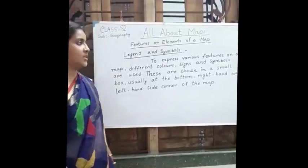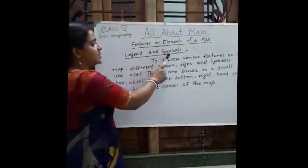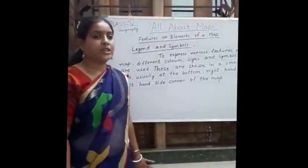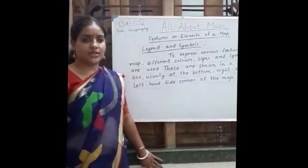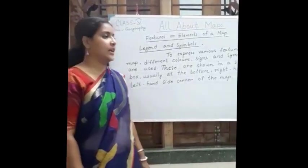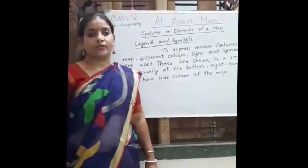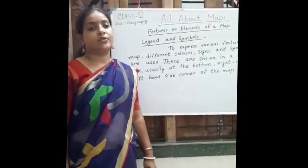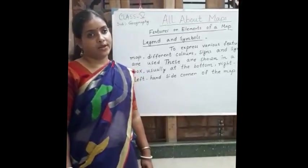Come to the next feature, that is legend and symbols. On a map, to indicate different features, some symbols and colors are being used. For example, on a physical map, colors are used to represent different landforms and water bodies.